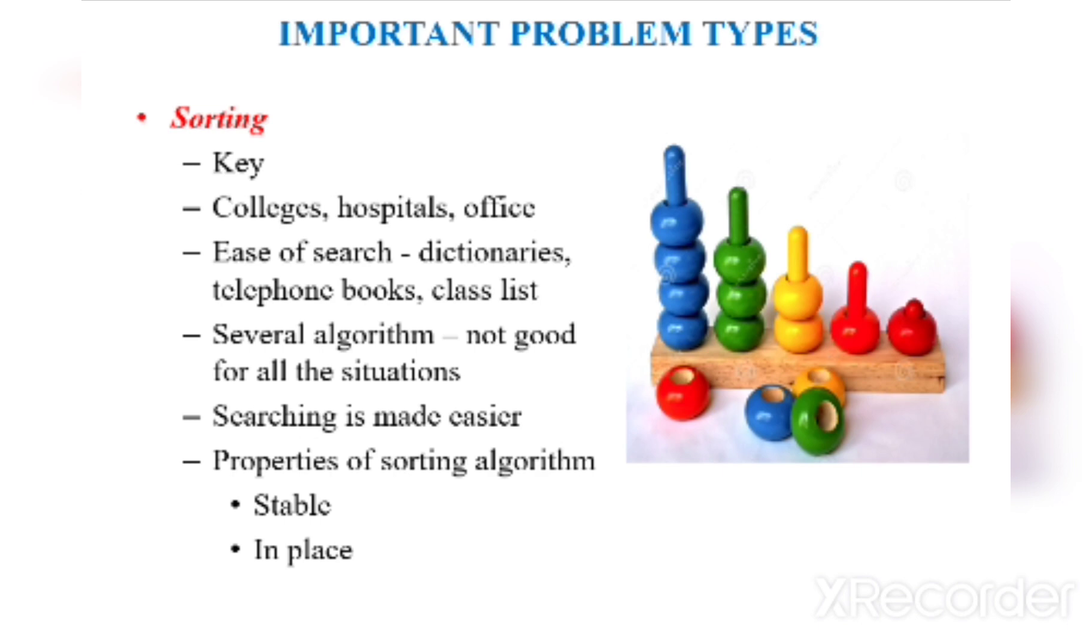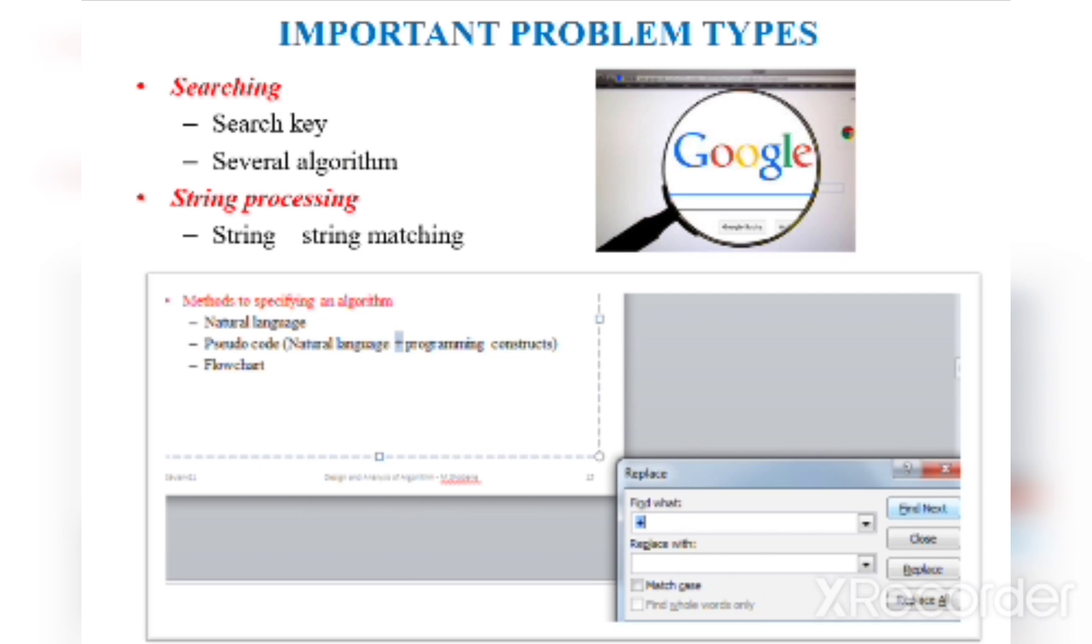The next problem type is searching. Searching is used for searching a given element in the set of elements. Here we'll be using a search key, and we can have several algorithms for searching an element in the list. For your kind information, Google changes its algorithm 500 to 600 times in a year to improve the efficiency of searching and improve the user experience.